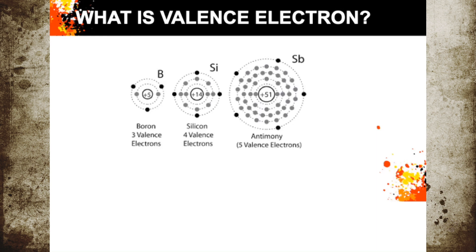So what is a valence electron? Valence electrons are the electrons in the outer shell that bond with other atoms. For example, we have here boron, silicon, and antimony. The dots shown outside are the electrons that we call valence electrons.